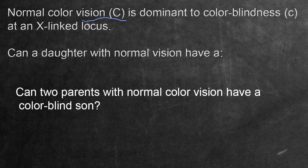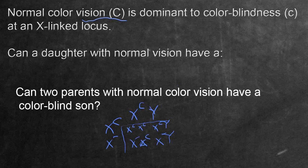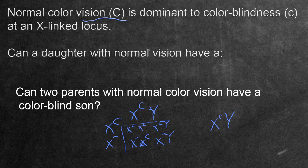Can two parents with normal color vision have a colorblind son? The father needs a dominant C for normal vision, and the mother also needs at least one dominant C. A colorblind son would have a little c and a Y chromosome. The X chromosome for the son always comes from the mother. Since the son needs a little c that can only come from the mother, the mother has to be heterozygous — big C and little c — in order to have normal vision herself while also passing on the recessive allele to produce a colorblind son.